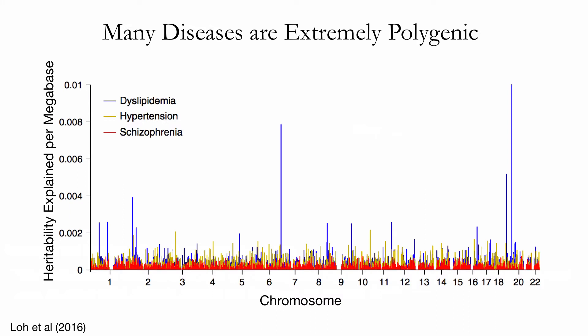Consider, for example, this paper from Purcell, Rouleau and colleagues, which estimated that somewhere between 71 and 100% of all 1 megabase blocks in the human genome make a non-zero contribution to the heritability of schizophrenia. While schizophrenia may be a particularly extreme example, for many diseases the genetic variation in disease risk can be explained by a significant contribution from a very large number of alleles, each making very small contributions to variation in disease risk on their own.